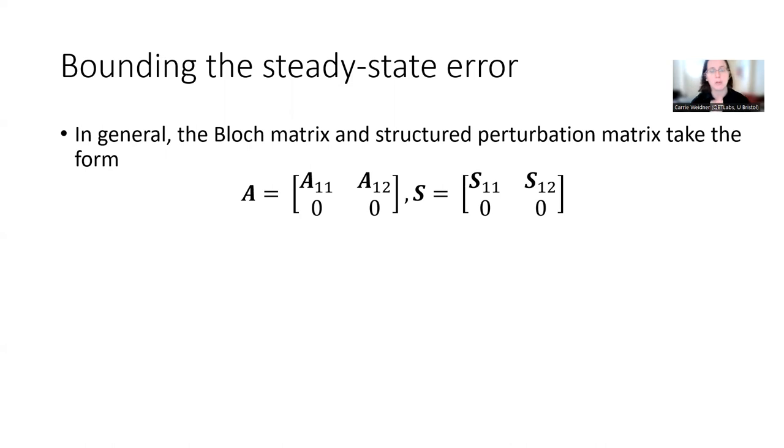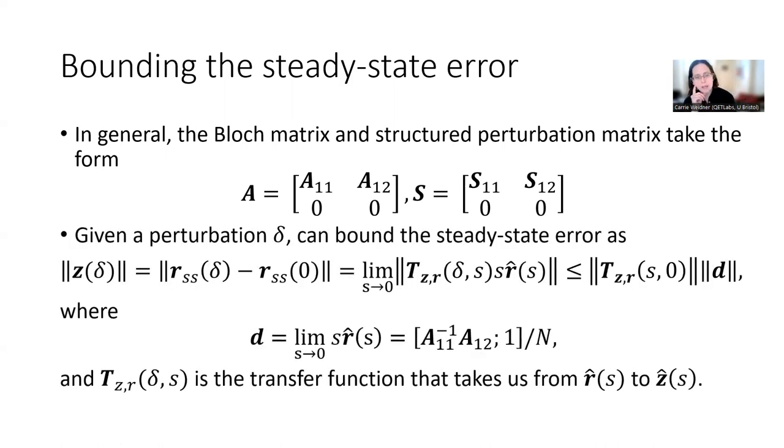So let's look at this from a control perspective. I'll go through this fairly quickly because it should be reasonably elementary. In general, the Bloch matrix and the structured perturbation matrix take on these forms where we've got this bottom row zeros here. And basically, given the perturbation delta, we can actually take, we can look at the, we can bound the steady state error, which is given here by this z of delta as the limit as s goes to zero, basically of something that's related to the transfer function. And then this norm of r sub s, which is basically less than or equal to the norm of the transfer function at zero perturbation. And then the norm of this vector d, where basically you can see how d is described down here. And we take T z, r at delta and s to be the delta function, or sorry, the transfer function that takes us from r to z. So good.